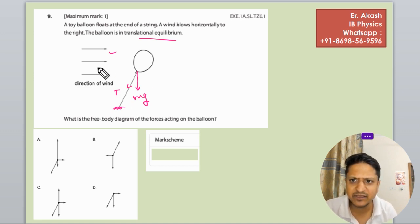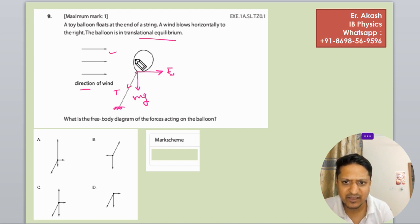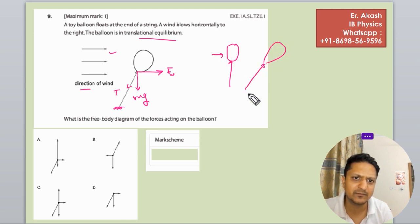Then there is the direction of wind - something is pushing the balloon towards the right. We can call this the wind force. If there was no force, the balloon would be straight. But now there is a force, so the balloon has tilted like this.